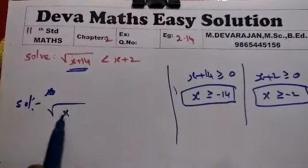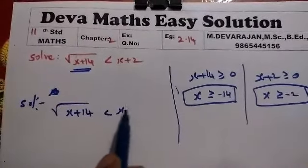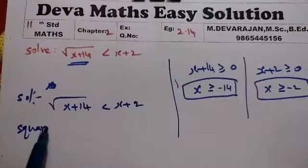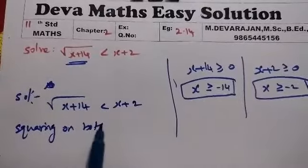For the x plus 14 solution, root of x plus 14 less than x plus 2, we square on both sides.